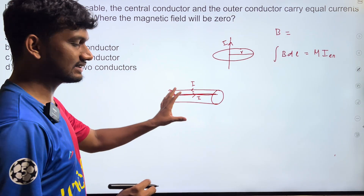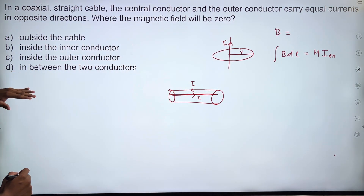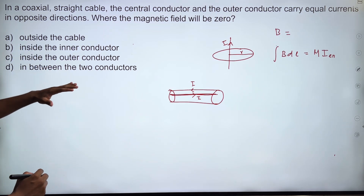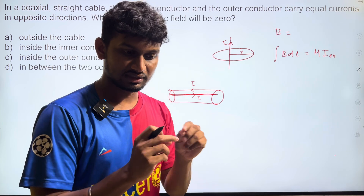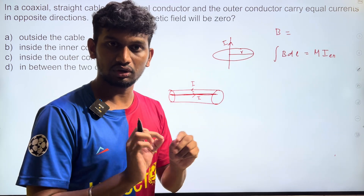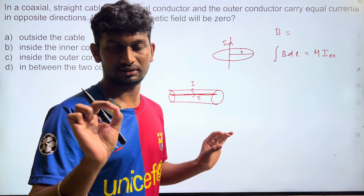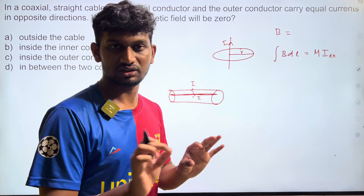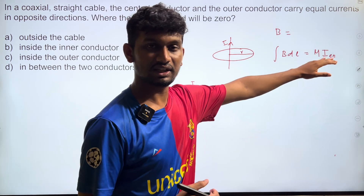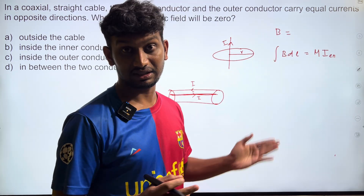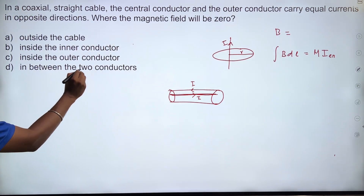In this setup, to find the magnetic field at any point, you start from inside the inner conductor. The inner conductor is solid, and there is always a current flowing inside it — charge flow exists inside the conductor. So i_enclosed is non-zero inside the conductor, which means B cannot be zero inside the inner conductor.